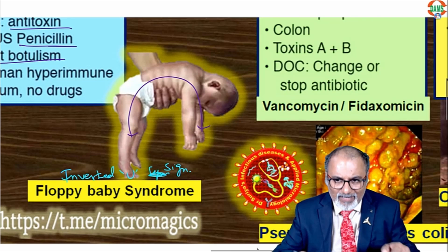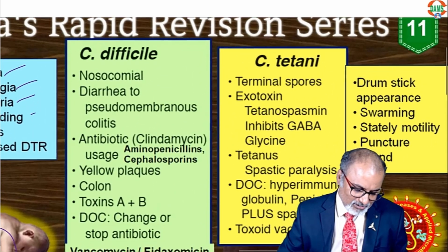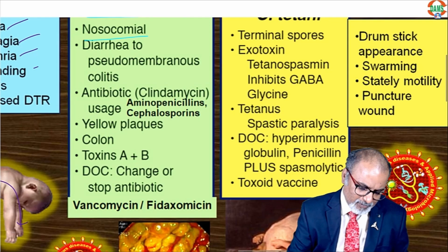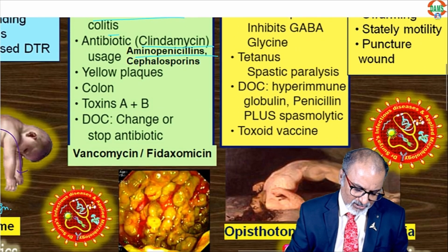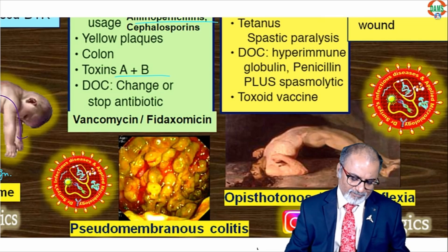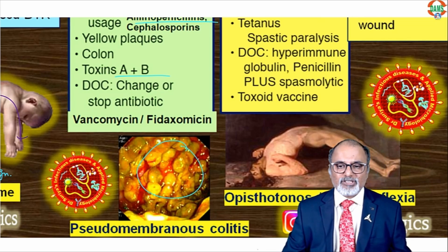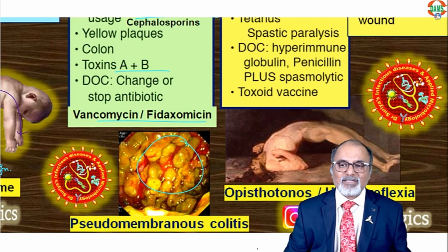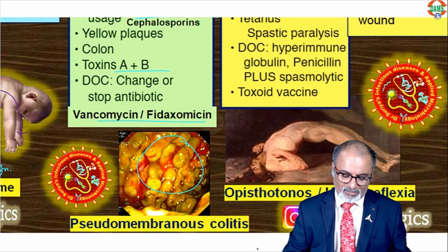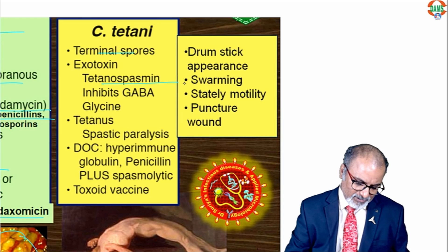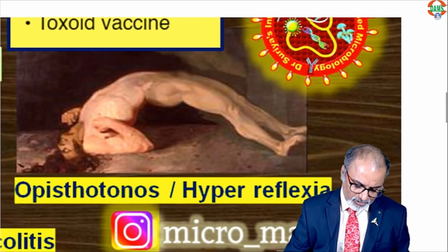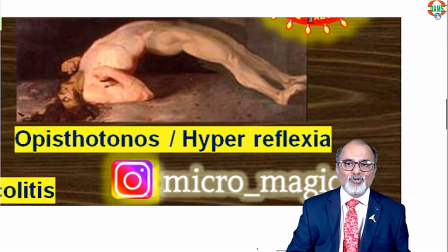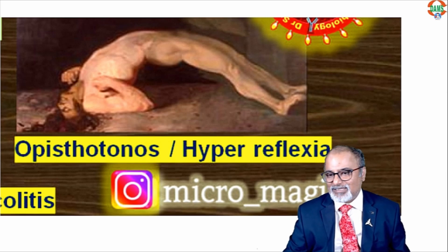Inverted U sign — if you take the baby flaccid like this. Next, Clostridium difficile causes hospital-acquired acute diarrhea with pseudomembranous colitis. Associated antibiotics include clindamycin and aminopenicillins. Two toxins: A and B. This is a colonoscopy picture of pseudomembranous colitis. Treatment: vancomycin; best is fidaxomicin. Next, Tetani: tetanospasmin inhibits GABA/glycine release, causing spastic paralysis. Drumstick appearance, swarming motility, puncture wound. This is opisthotonus or hyperreflexia — a beautiful picture.